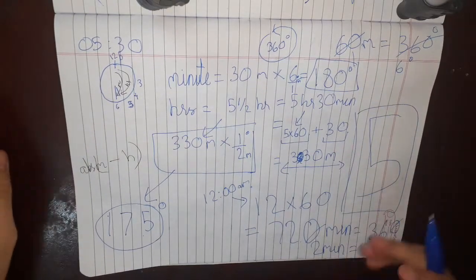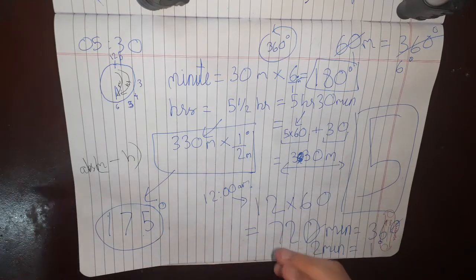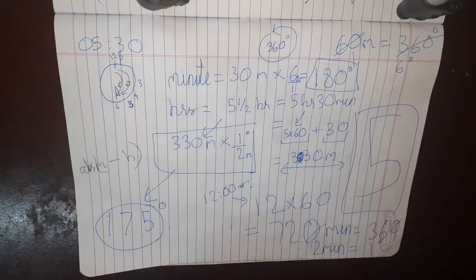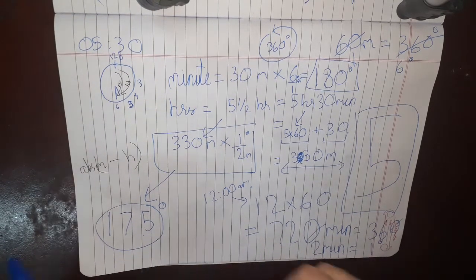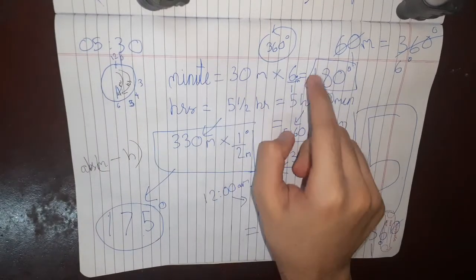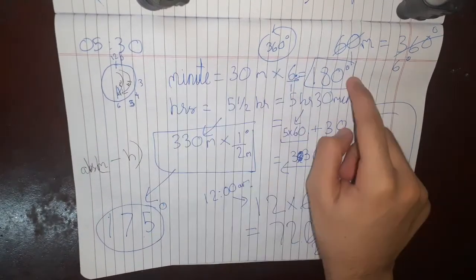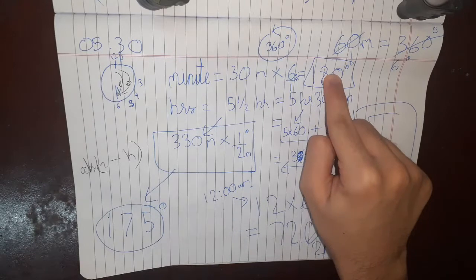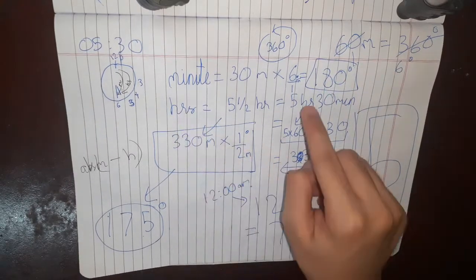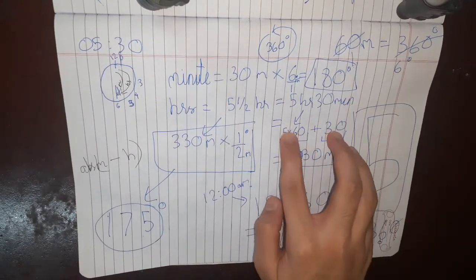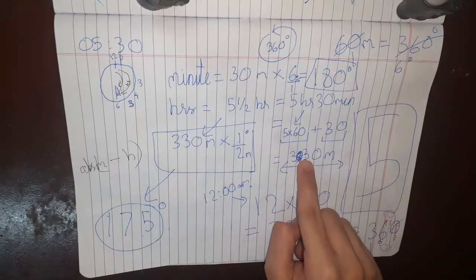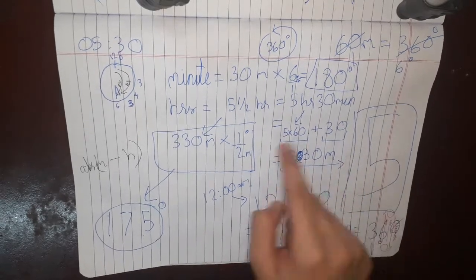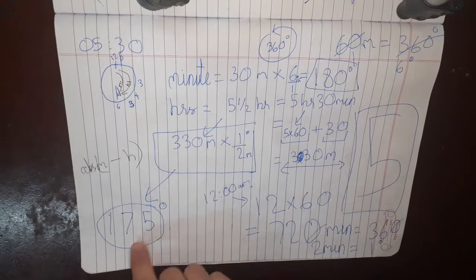So you simply have 2 formulas that you have to use over here. Multiply the minutes directly by 6 to get the minute degree. Multiply the hours by 60, add the minutes, and make this whole thing half to get the hours degrees. Then take the difference of the 2.